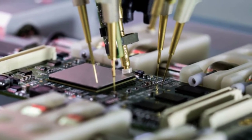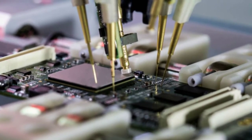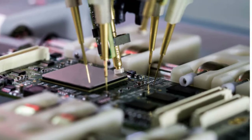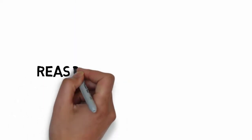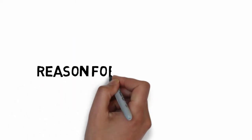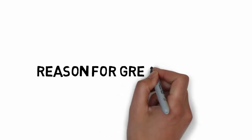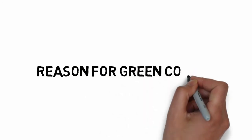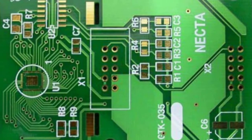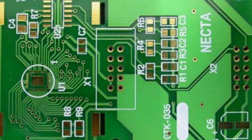You can check the board with flying probe techniques and AOI techniques. You can manufacture PCB boards with green color. There is another technical reason for PCB boards being green color.